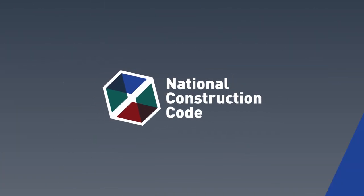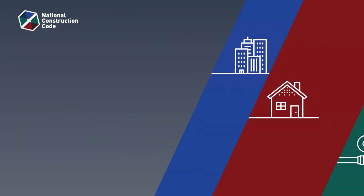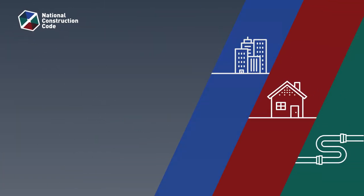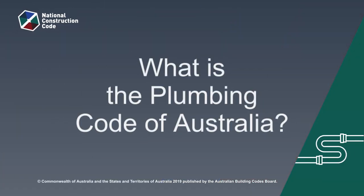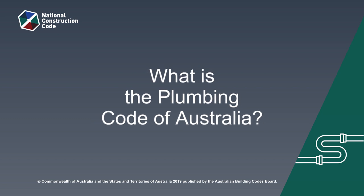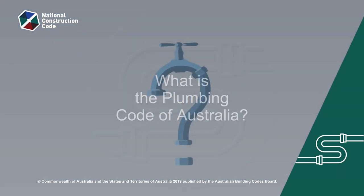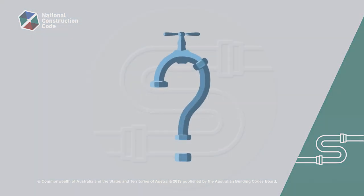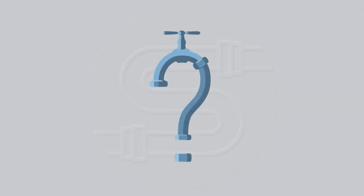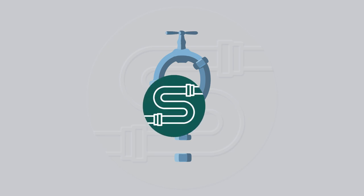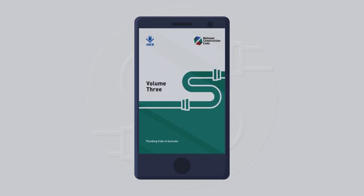In this video we're going to take a closer look at the Plumbing Code of Australia. The Plumbing Code of Australia is the third volume of the National Construction Code, also referred to as the PCA.